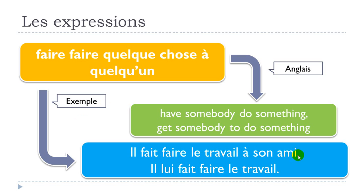Let's see one example now. Il fait faire le travail à son ami. You can see that the first faire is conjugated — it's the present form 'il fait' — and then you put the second verb faire at the infinitive form. In many situations we will try to avoid repeating words, so the 'à son ami' part, which we call complément d'objet indirect, can be replaced by the pronoun 'lui'.